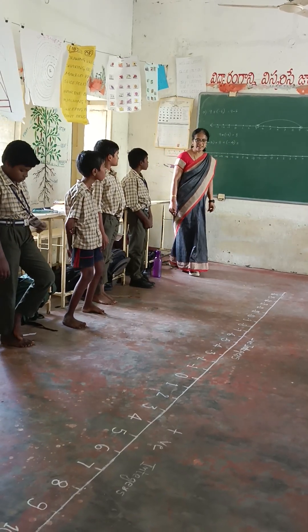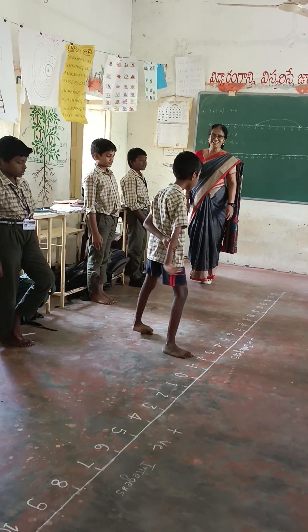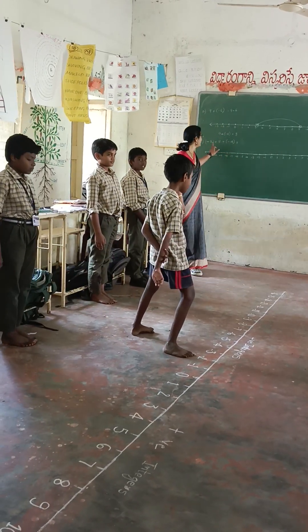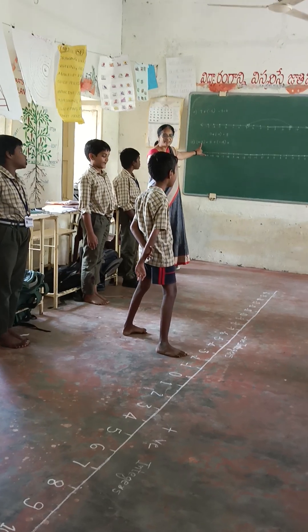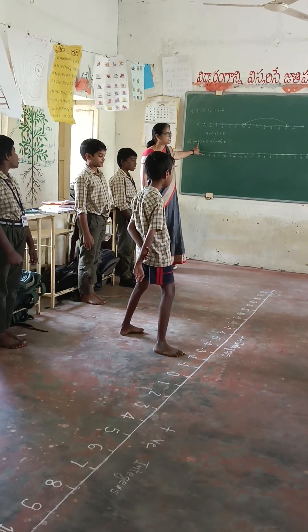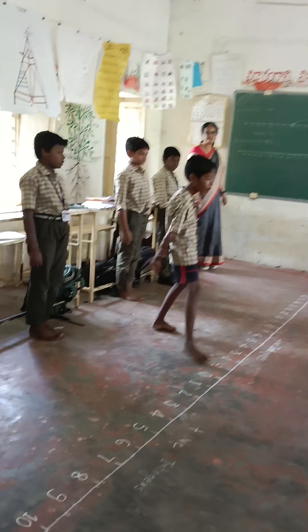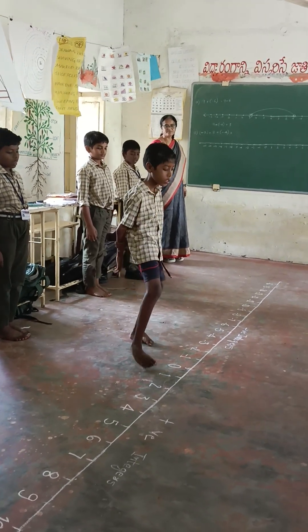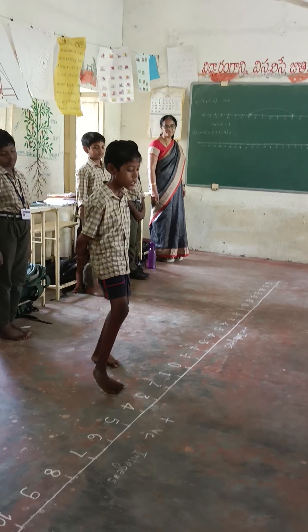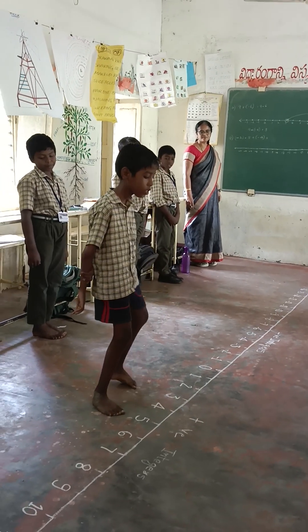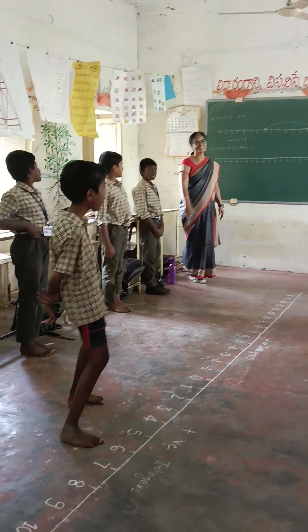So who is going to jump on the number line? Avinash. So Avinash is at minus 2. Now add 8: 1, 2, 3, 4, 5, 6, 7, 8. It goes to? 6.